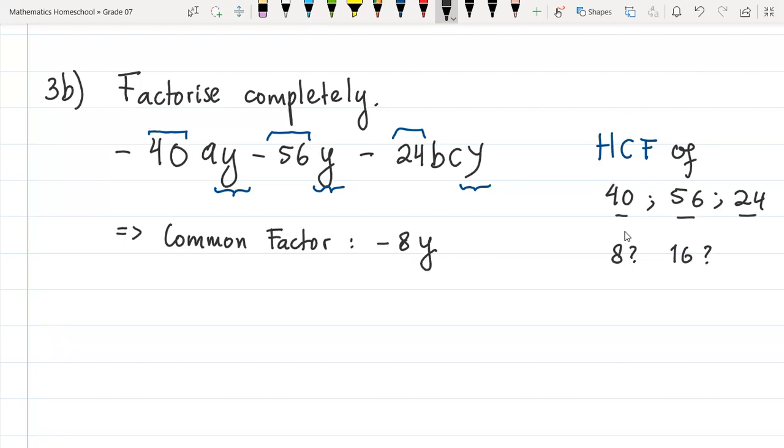And that's all. There's no other things that can be placed outside the bracket. So we factor as negative 8y. Now you can ask yourself, negative 48y divided by negative 8y will be positive 5a. Negative 56 divided by negative 8 is 7, and y divided by y is 1, so you just have 7.